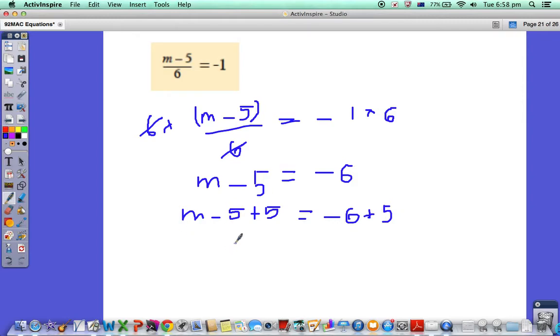What am I left with? m equals negative 6 plus 5, which is negative 1. We can substitute this back into the original formula: negative 1 minus 5, all divided by 6, equals negative 6 divided by 6, which equals negative 1—which is what we had in the first place.